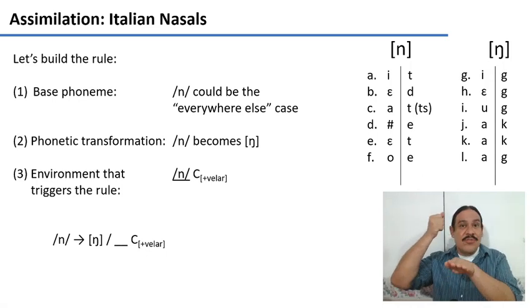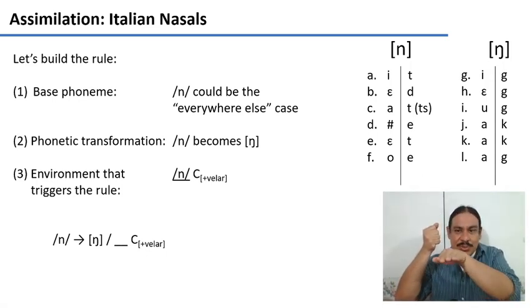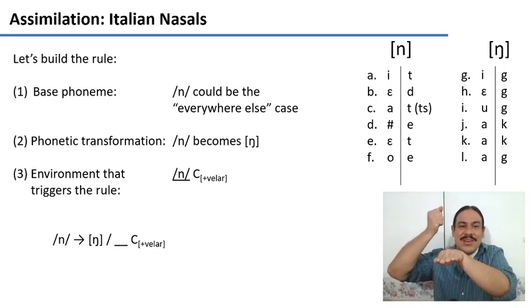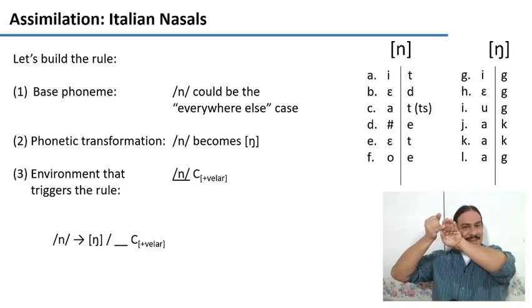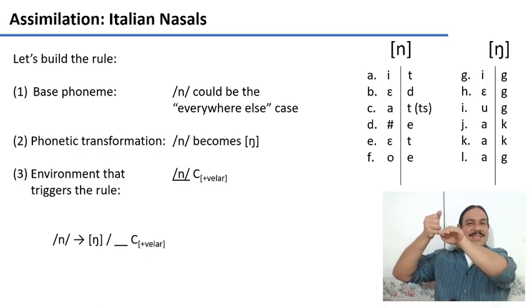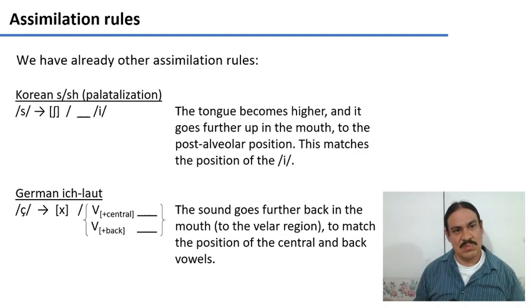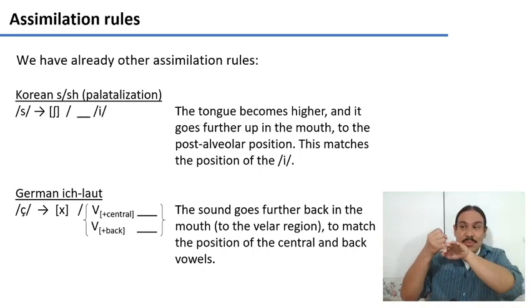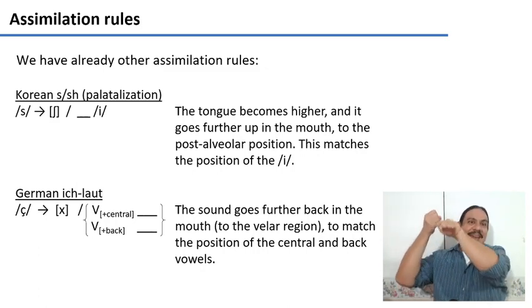The g and the k are velar and the n is alveolar. So your tongue is in this position but the velars are way over here. So the velars are pushing your tongue back to the velar position. They are assimilating the nasal into the velar position. Why are they doing this? Essentially to save yourself a little bit of effort when you're moving your tongue so that the tongue is in the same position for the nasal and for the stop.